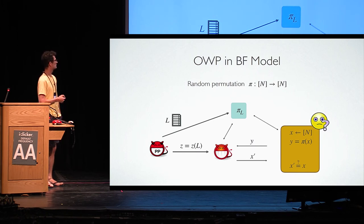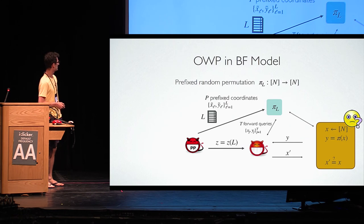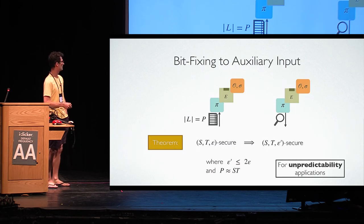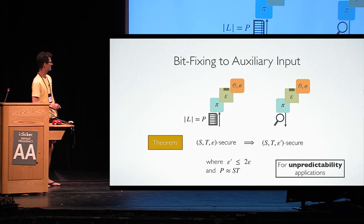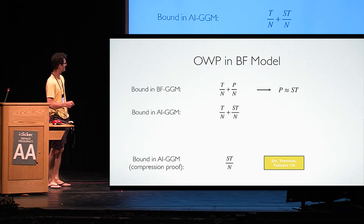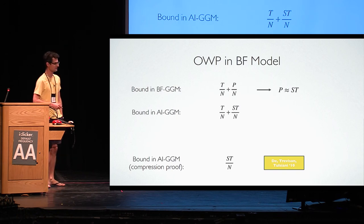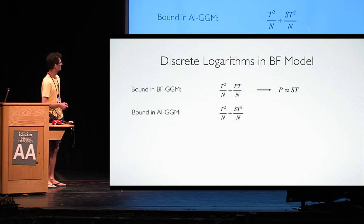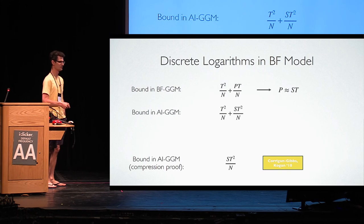Similarly for one-way permutations: you prefix coordinates, extend the bad event to include those prefix coordinates, and get a new bound. Since this is an unpredictability application, a second version of the pre-sampling says you lose only a factor of two, provided you choose p to be at least s·t. Setting p = s·t, we lose a factor of two, so asymptotically it is the same, and this is the final bound. It matches the compression-based proof known before. The same applies to discrete logarithms: update the bad event, get a new bound, set p = s·t, and the final bound again matches the compression-based proof.